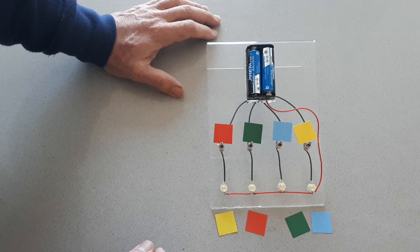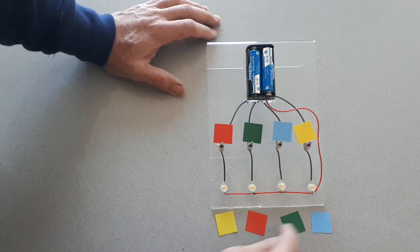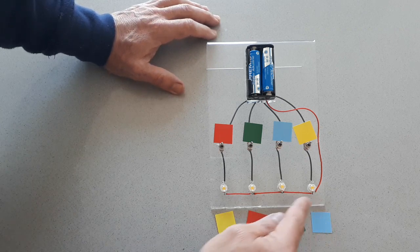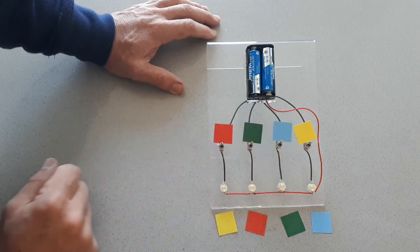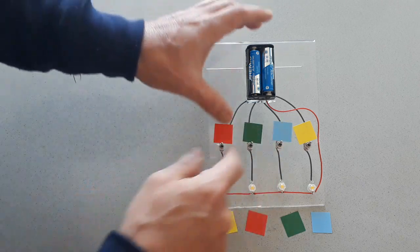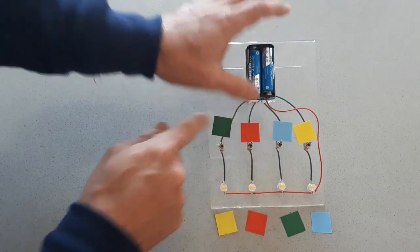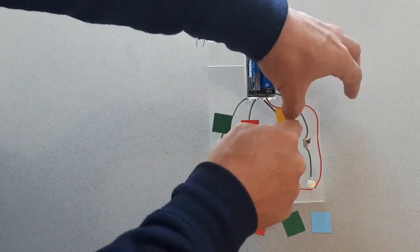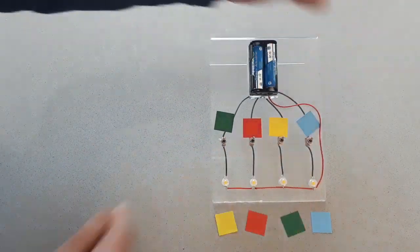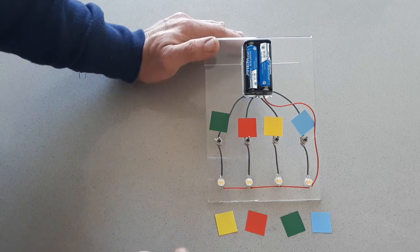What would happen if instead of changing the position of the colors of the LEDs, I change the position of the colors of the interrupts. For example, if I do something simple, as simple as this. Let's see what happens.